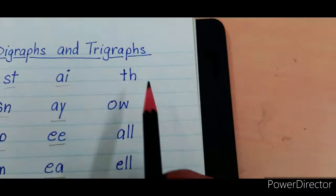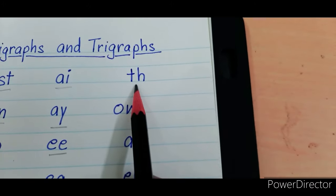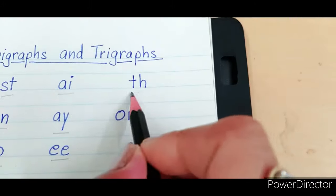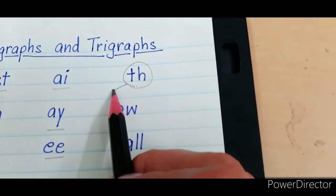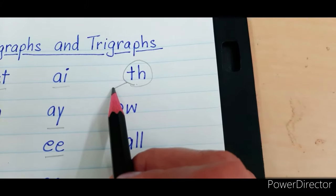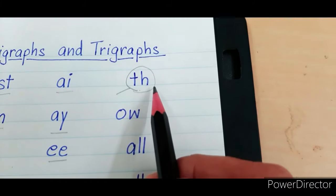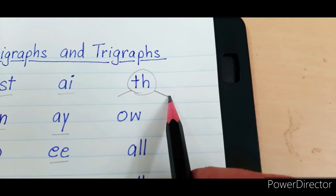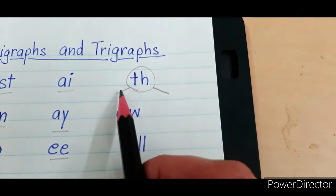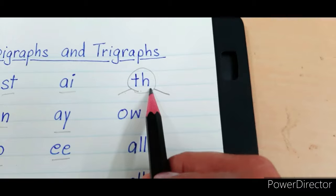Now th has two sounds. First is th, like three, thanks. Next sound is the, like this, that. Th, the.